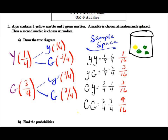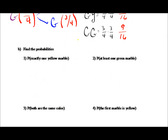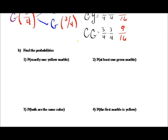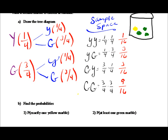Let's take a look at some examples. First, find the probability of exactly one yellow marble. Exactly one yellow is here, and exactly one yellow is here. Those probabilities are three sixteenths and three sixteenths, so the probability of getting exactly one yellow is six out of sixteen.